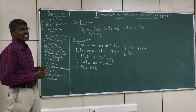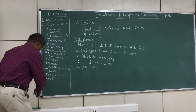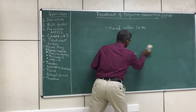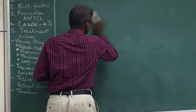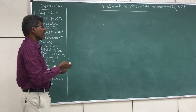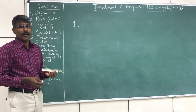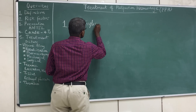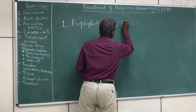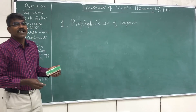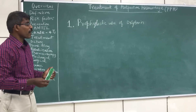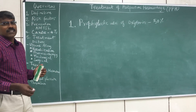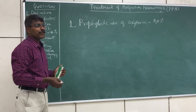Now let us see how to prevent postpartum hemorrhage. Postpartum hemorrhage can be prevented by active management of the third stage of labour. The first and most important measure is the prophylactic use of oxytocin, which can lead to a reduction of more than 50% in the risk of postpartum hemorrhage.